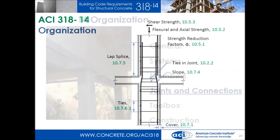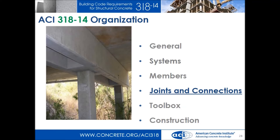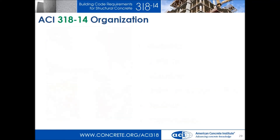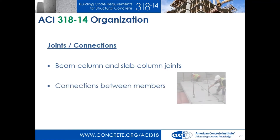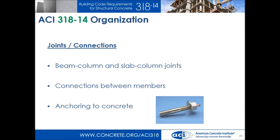Next we move on to joints and connections. We've run our analysis, got our required strengths, designed our members, and now we need to put things together. We'll have chapters for beam-column and slab-column joints in cast-in-place construction, and another chapter for precast connections between members. The precast chapter previously mixed design and connection content — we've pulled that apart so beam or column design is in its own location, and connections are in their own chapter. Finally, anchors to concrete — old appendix D — is now a regular chapter in 318-14, covering bolts, cast-in anchors, and post-installed anchors attaching something to concrete.